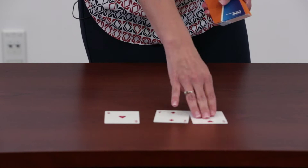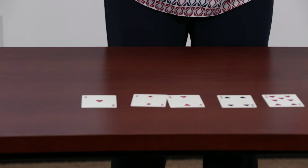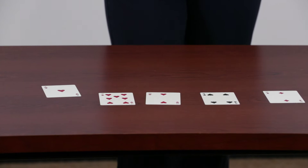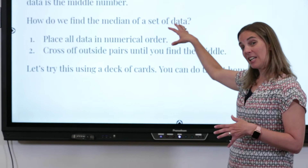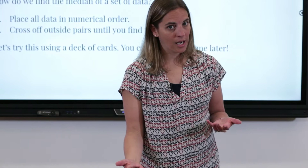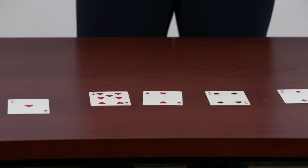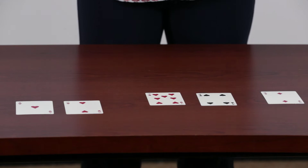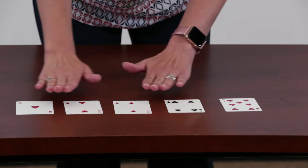I've got my five different cards here. I'm going to mix those up a little bit — it just so happened I pulled them out in the right order. Now we're going to follow our steps. Our first step is to put the data in numerical order. I'm going to pretend that my ace is a 1, so I'll put my ace first, then 2, another 2, then my 4 and my 7. Now I have my data ordered from least to greatest.